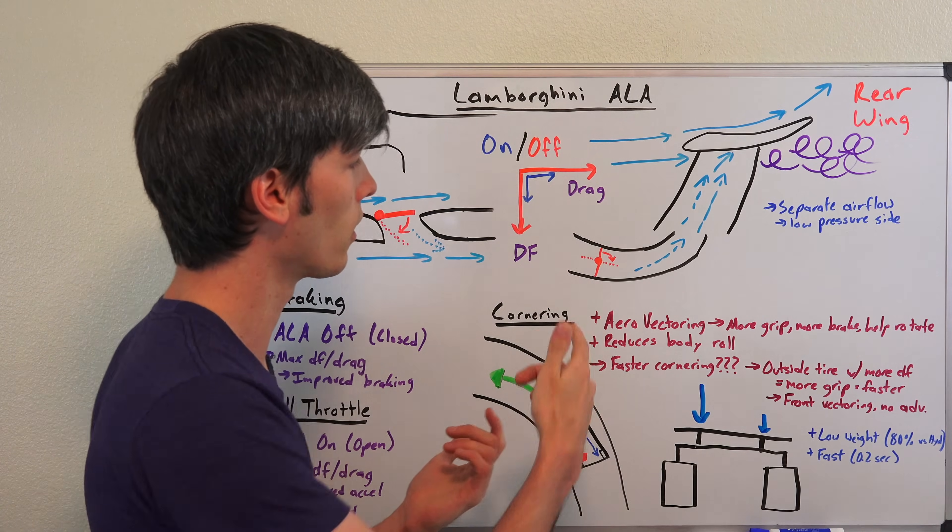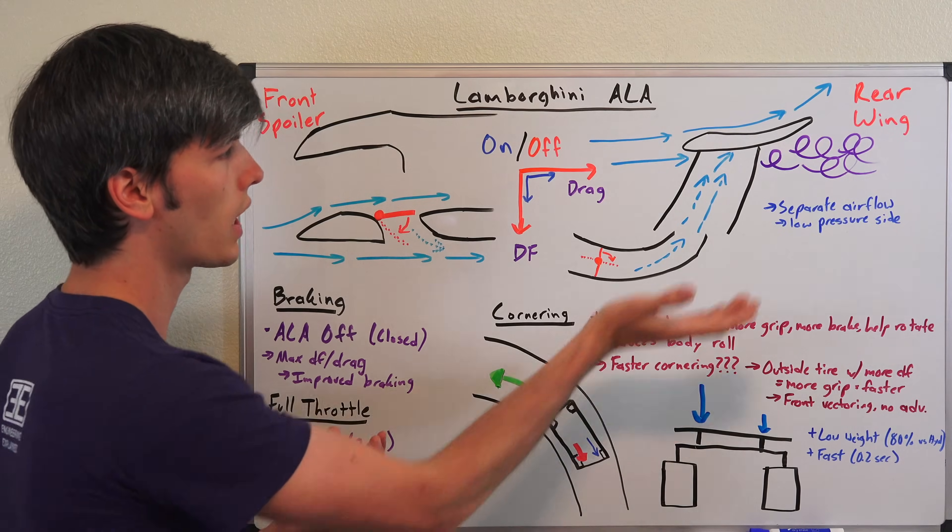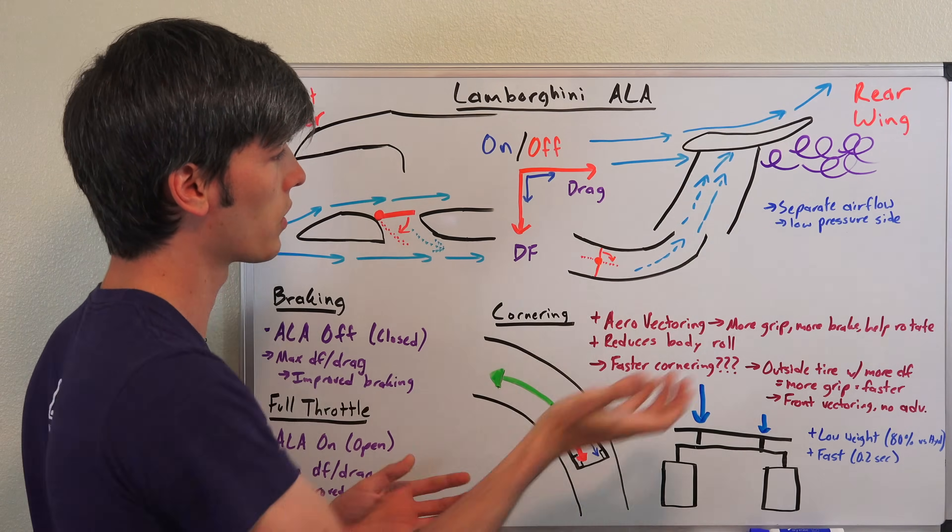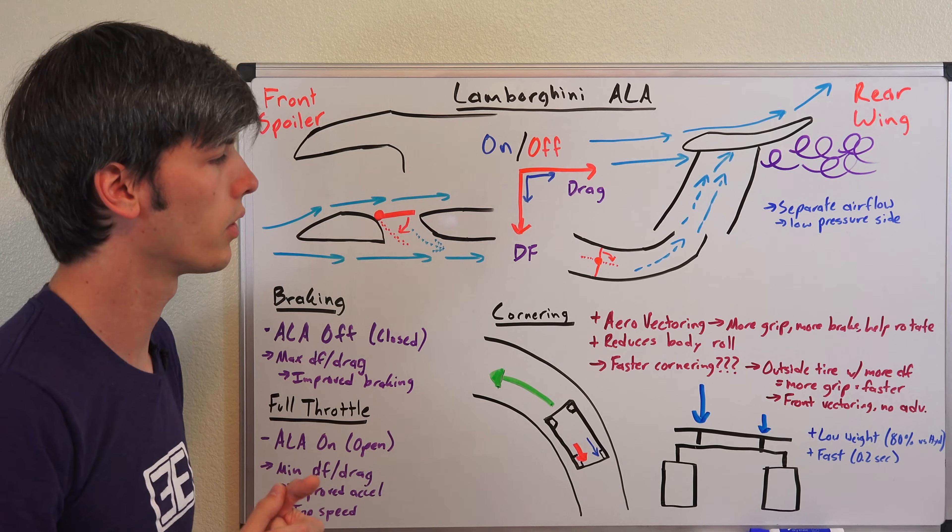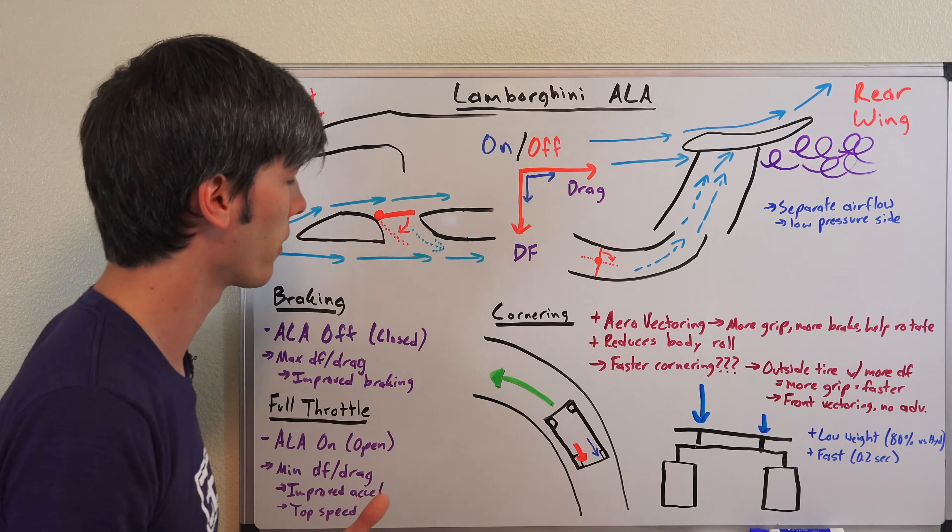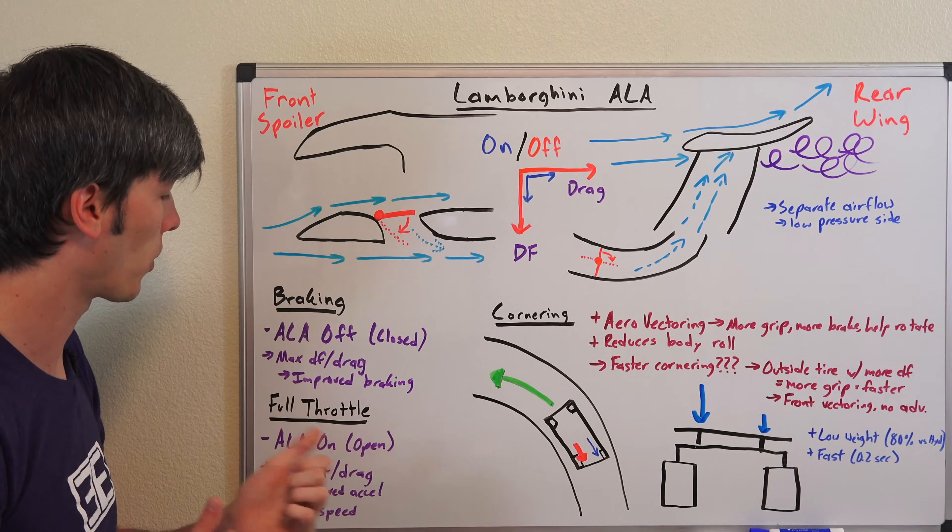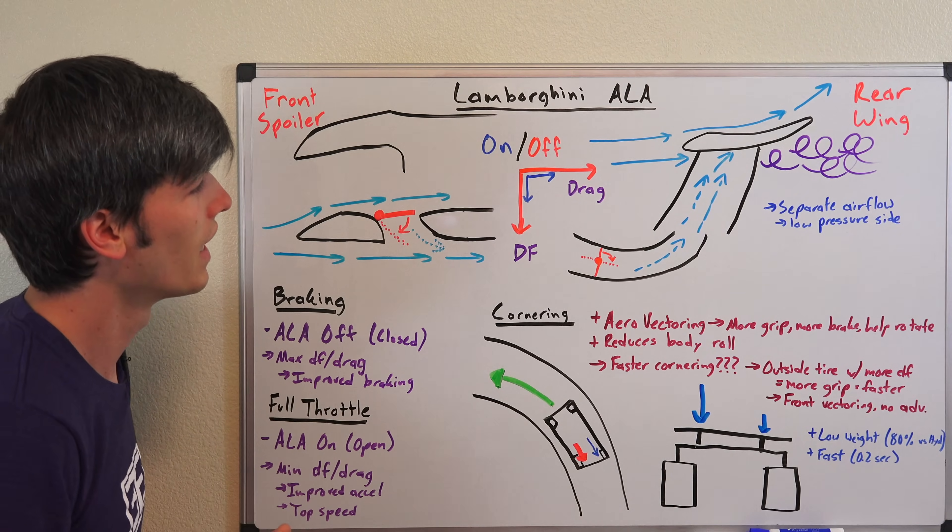They say they can open and close these valves in 0.2 seconds. So versus a hydraulic wing which may take more time to lift up or lower down depending on the scenario you're in - so very fast acting. So both of those very real benefits, very real benefits for braking and for full throttle. I'm not totally convinced that in cornering it's honestly going to make a huge difference.